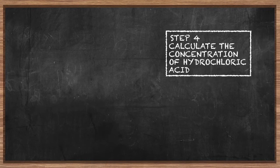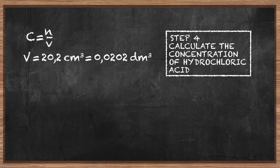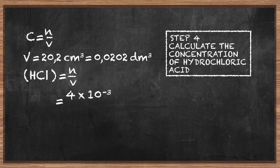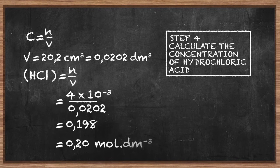Step 4: calculate the concentration of hydrochloric acid. Concentration equals the number of moles divided by the volume of acid in decimetres cubed. 20.2 cm³ equals 0.0202 decimetres cubed. The concentration of the acid equals 4 × 10⁻³ divided by 0.0202 decimetres cubed, giving an answer of 0.20 mol per decimetre cubed.